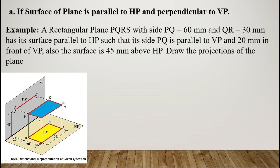We are talking about plane PQRS — the blue one. PQ = 60 mm and QR = 30 mm, so QR and PS are both 30 mm, and PQ and RS are both 60 mm. PQ is parallel to VP and 20 mm in front of it. As we can see, the true shape — the surface of this plane — will be visible in the top view, giving us the rectangle of true shape in the top view.